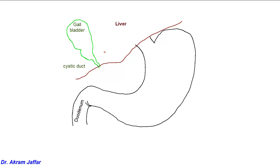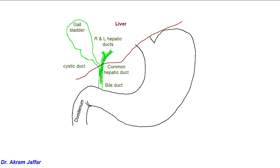At the hilum of the liver, there is the right and left bile ducts that unite to form the common hepatic duct, and the common hepatic duct unites with the cystic duct to form the bile duct. The bile duct will be located in the free border of the lesser omentum, and then passes behind the first part of the duodenum.